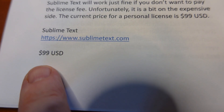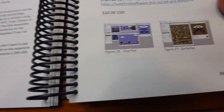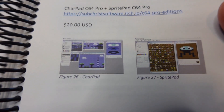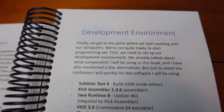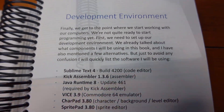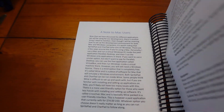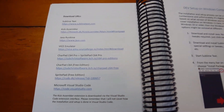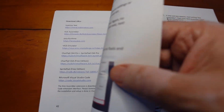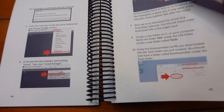You don't have to pay $99 — you can use the free version of Sublime Text. He also uses CharPad and SpritePad, and there are discussions on how to set up the development environment with screenshots for both PC and Macintosh users.